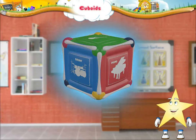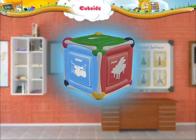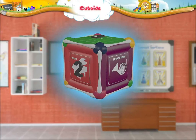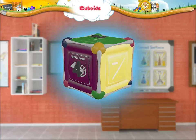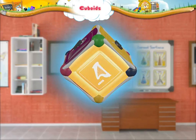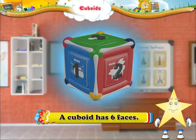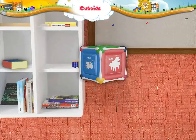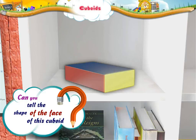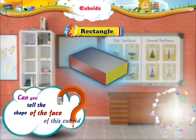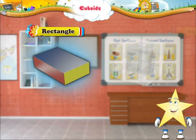Now Starry, let us count its faces. 1, 2, 3, 4, 5, and 6. So a cuboid has 6 faces. Can you tell the shape of the face of this cuboid? Yes, it is a rectangle. But Starry, a cuboid can also have a square shaped face.